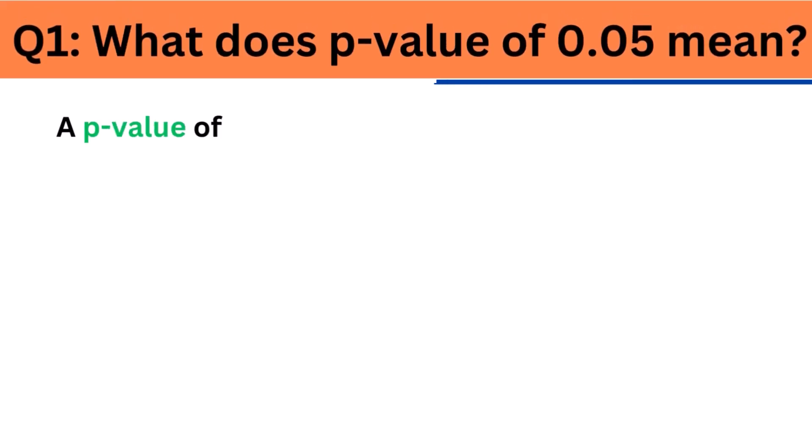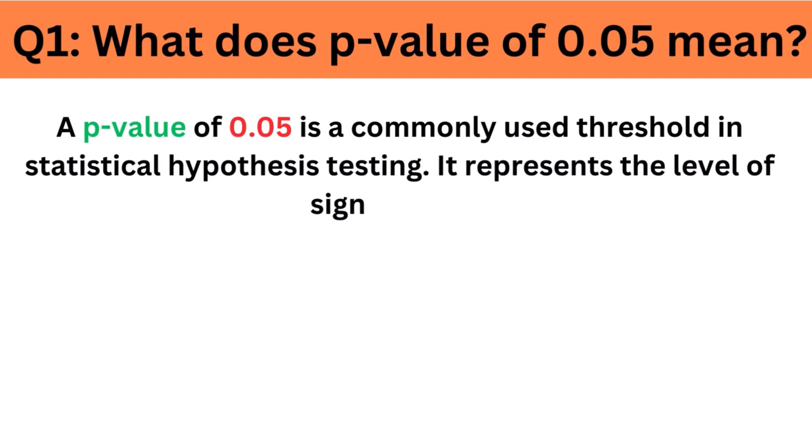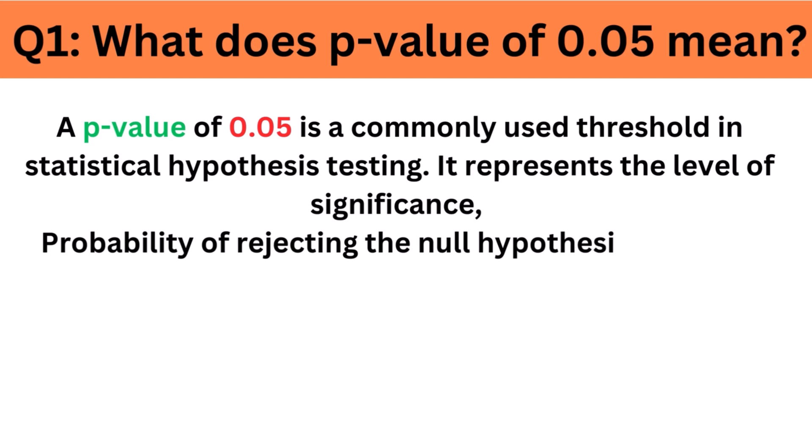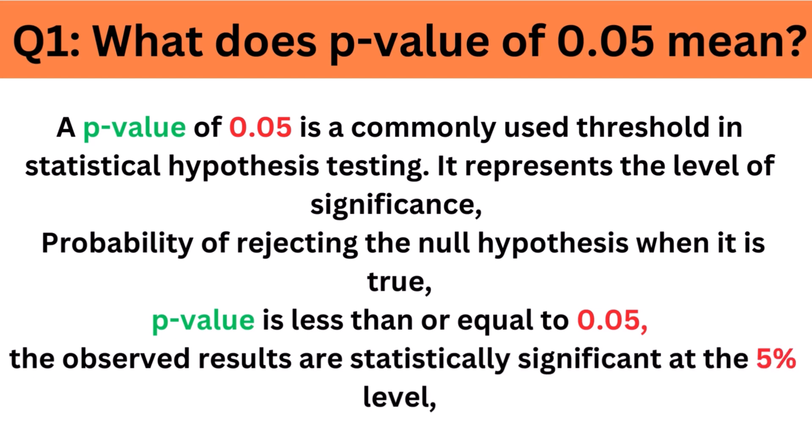What does p-value of 0.05 mean? A p-value of 0.05 is a commonly used threshold in statistical hypothesis testing. It represents the level of significance, typically denoted as alpha, which is the probability of rejecting the null hypothesis when it is true. If the p-value is less than or equal to 0.05, it suggests that the observed results are statistically significant at the 5% level, meaning they are unlikely to occur by chance alone.